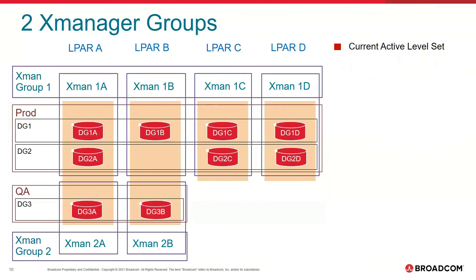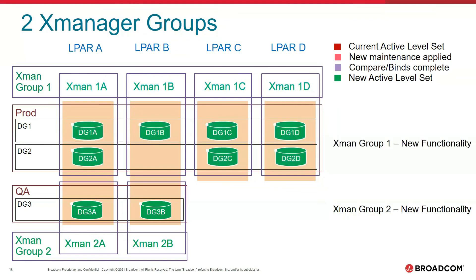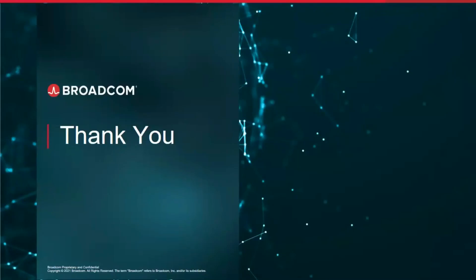If this is a situation in your environment, you may want to look at a two X-Manager group scenario where your QA X-Managers are in a separate group from your production X-Managers. This will allow you to apply your maintenance to your QA X-Managers, do the compares and binds, and activate the new functionality introduced by that level set without impacting the behavior of your production X-Managers. Once you're happy with the behavior changes, you can roll the maintenance out to your production X-Managers, do the compares and rebinds, and activate the new functionality for those X-Managers. This concludes our walkthrough on how to activate your first level set. If you have any questions, please feel free to reach out to me. Thank you for your time and have a great day.